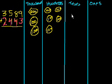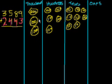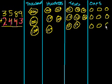And 8 tens: 1, 2, 3, 4, 5, 6, 7, 8 — each of these are 10. I'm doing this so you really understand what happens when we regroup numbers, or carry the 1s, which is the way I first learned how to add multi-digit numbers. And then we have 9 ones: 1, 2, 3, 4, 5, 6, 7, 8, 9 — each of these are 1. So that's 3 thousands, 5 hundreds, 8 tens, and 9 ones: 3,589.